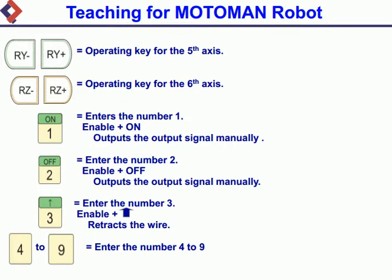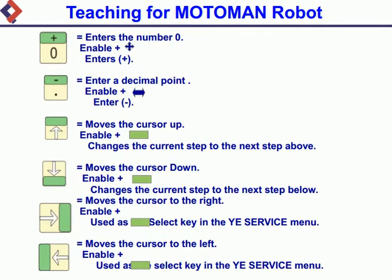Operating key for the 5th axis. Operating key for the 6th axis. Enters the number 1; Enable and ON outputs the output signal manually. Enters the number 2; Enable and OFF outputs the output signal manually. Enters the number 3; Enable Plus retracts the wire. Enters numbers 4 to 9.